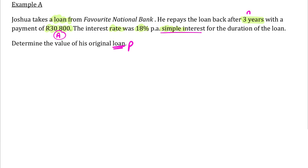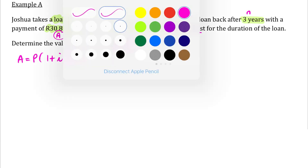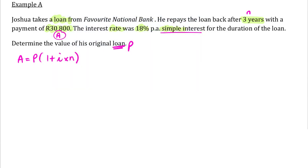Determine the value of his original loan — his original loan at the beginning is a P value. Because we see simple interest and we were given an A value, we're going to use the formula A equals P times one plus I times N. We know the A value is 30,800 rand, we want to find P, N is three years, and the interest rate is 18%, which is 0.18.